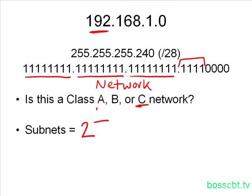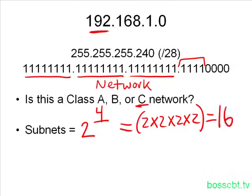So here we have four. This equals 2 times 2 times 2 times 2, which is 16. So by using this subnet mask, we can create 16 subnets, 2 to the power of 4, 4 subnet bits.